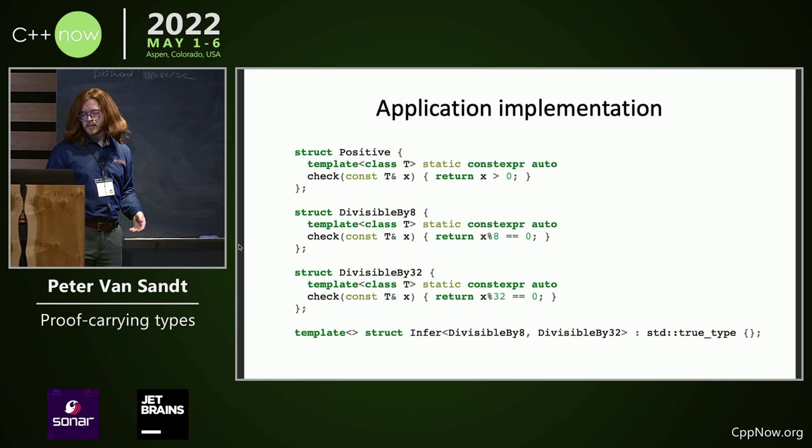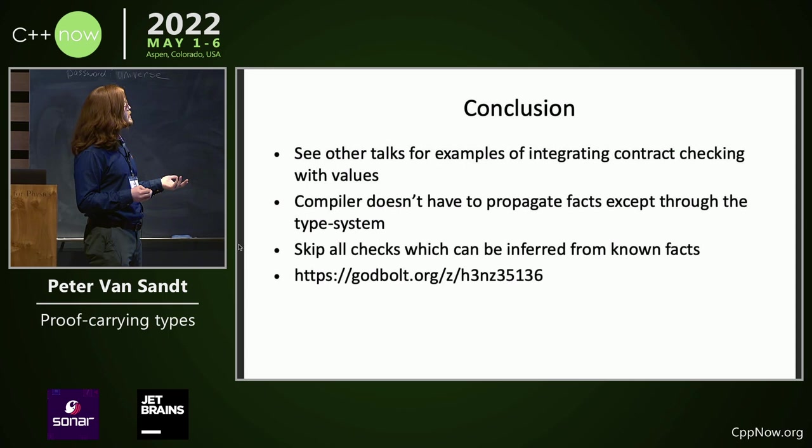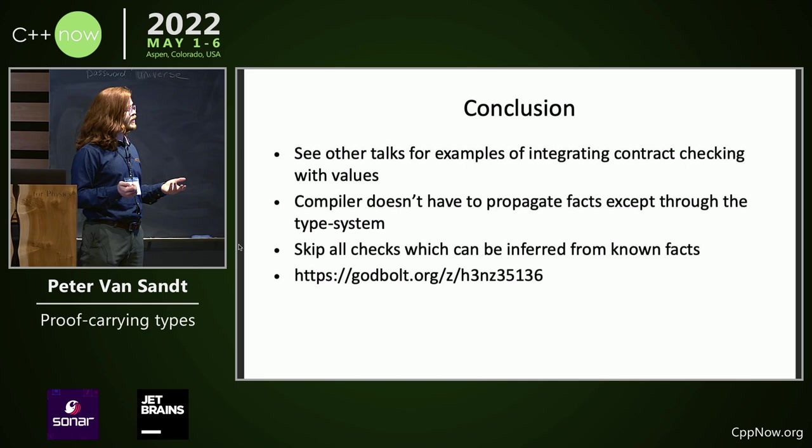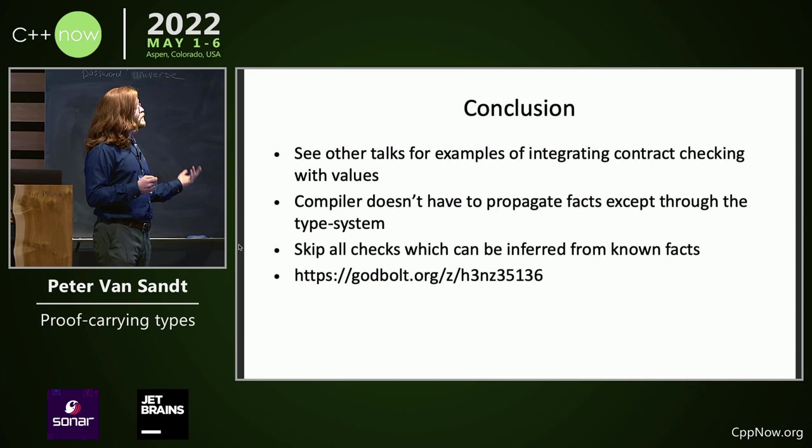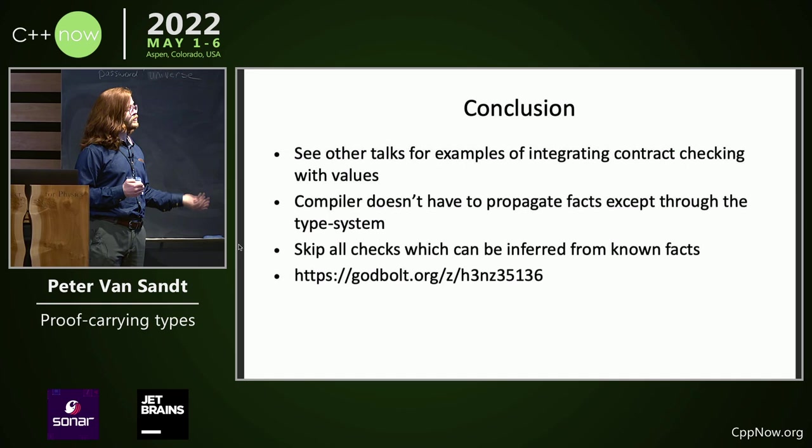Phil Nash has an example in his Zen of software lifecycle maintenance. What we can establish here is that the compiler doesn't have to propagate facts when we can do so through the type system, so you can have confidence in that. And you can skip checks which can be inferred from known facts — like the post-condition of sort is that it's sorted, so you don't need to check is_sorted if you've already sorted it. And that's all I had.